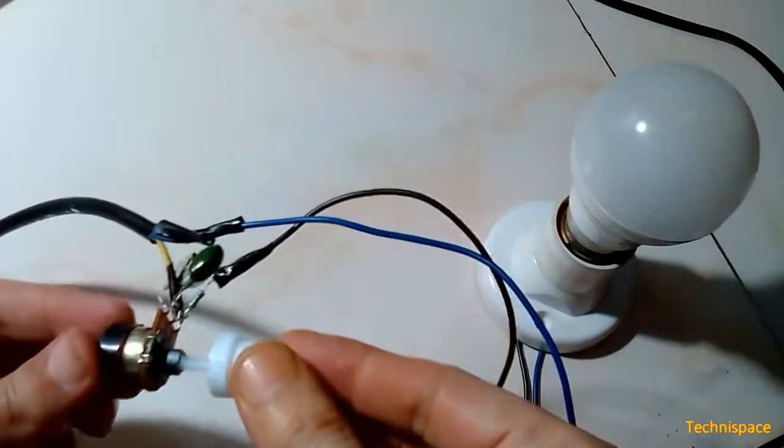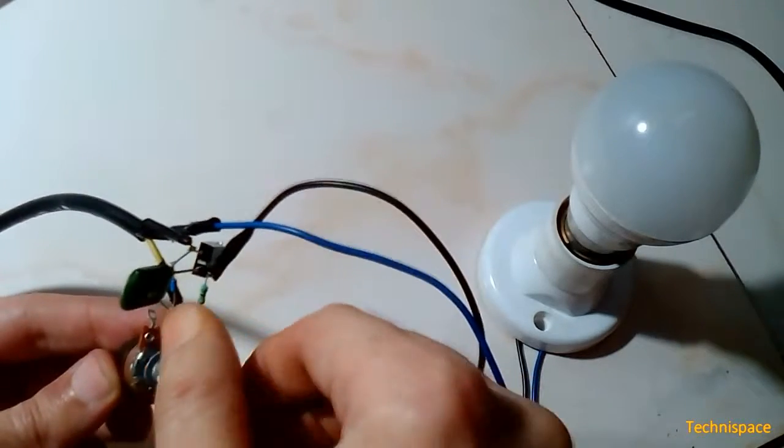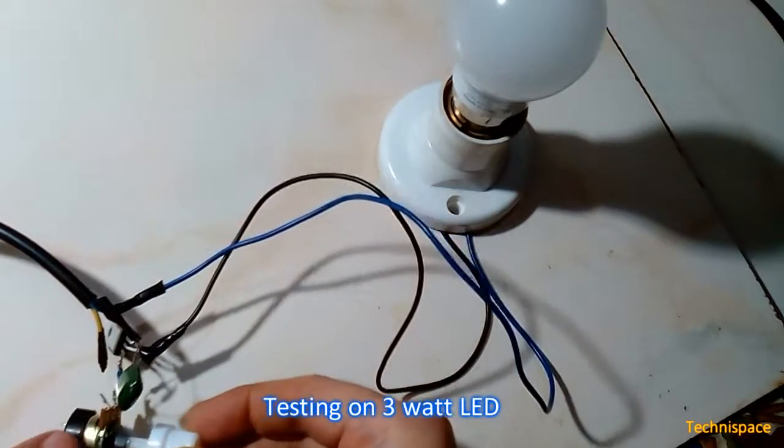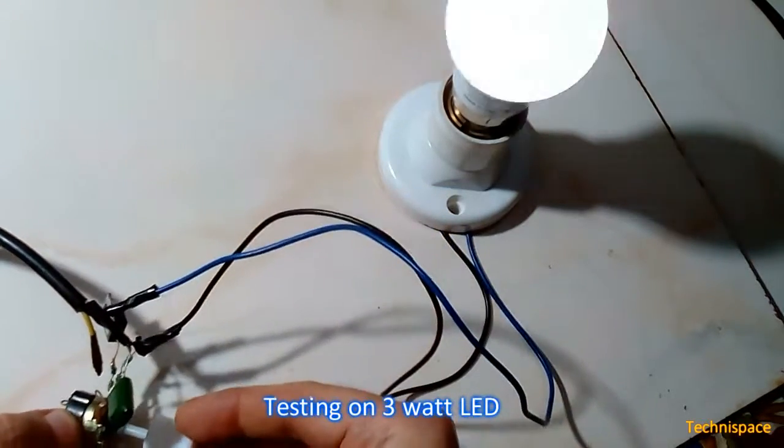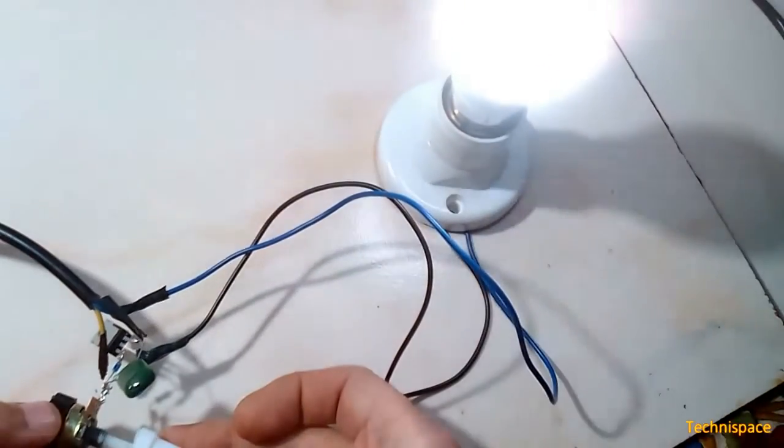Potentiometer will be used to control for dimming of LED light by revolving knob clockwise or anti-clockwise. Testing with 3 watts LED, it flickers at low voltage, it stops glowing with further decrease in voltage.